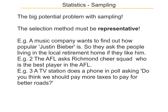When you sample a population, the biggest thing you have to be careful about is not being biased — the selection method must be representative. Here are some examples of bad sampling. A music company wants to find out how popular Justin Bieber is, so they ask people living in the local retirement home if they like him — a lot of people in retirement homes probably wouldn't know who Justin Bieber is. The AFL asks the Richmond cheer squad who is the best player in the AFL — they're more likely to pick a Richmond player because they're biased. A TV station does a phone poll asking whether we should pay more taxes for better roads — that's biased because the people who ring up will be the ones who don't like it, while those who don't really care probably won't ring up.